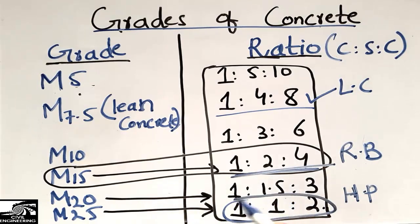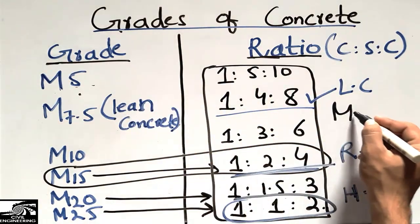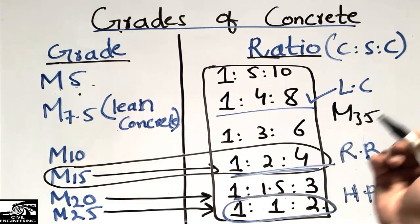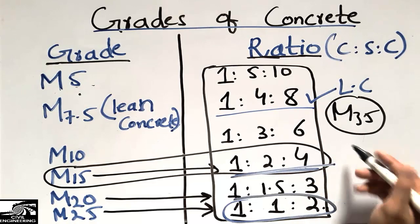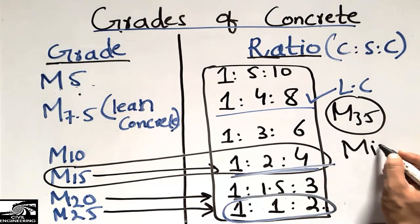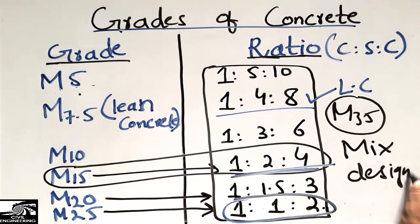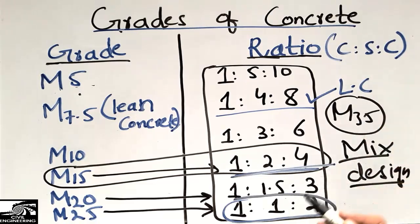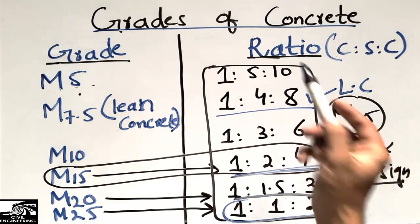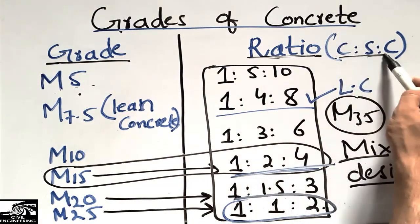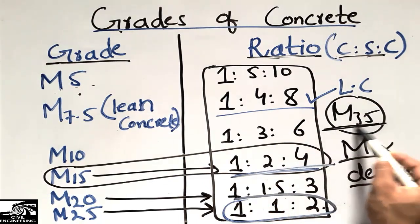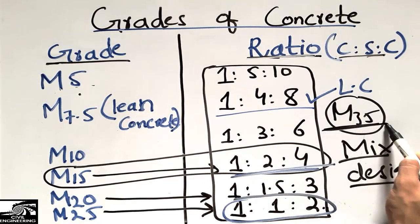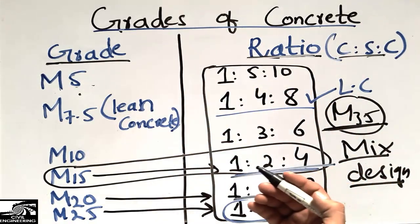Beyond these, grades of concrete also include M30, M35, M40, and M50. For these higher grades, we perform concrete mix design to determine the ratio of cement, sand, and coarse aggregate. We also sometimes use admixtures to achieve such high-strength concrete grades.